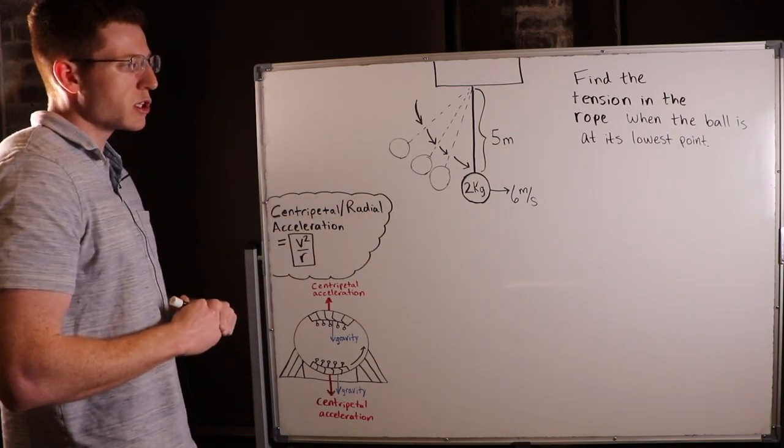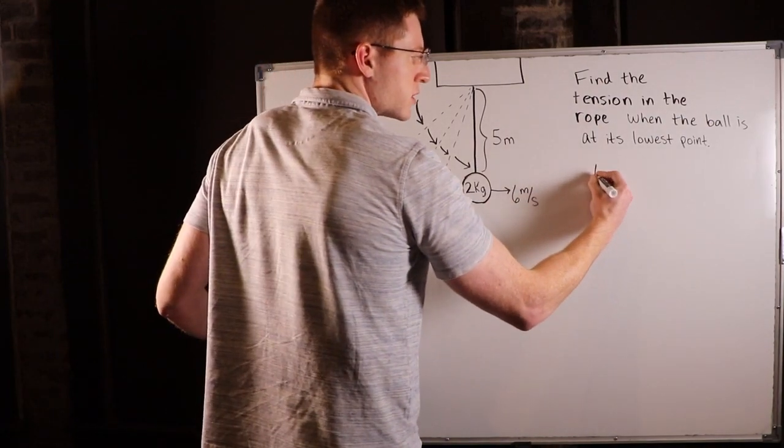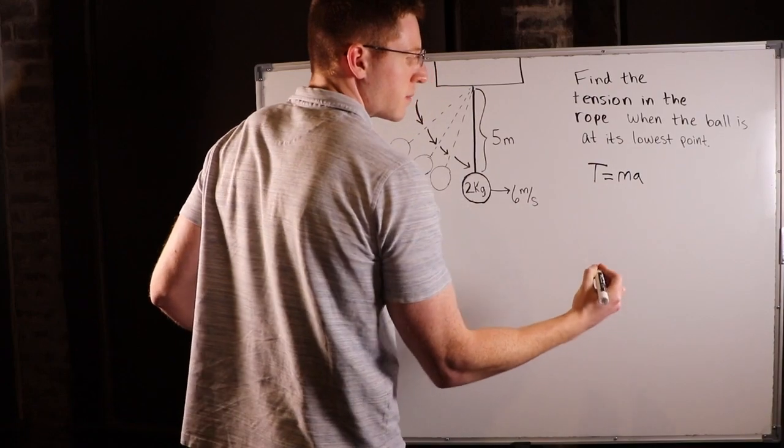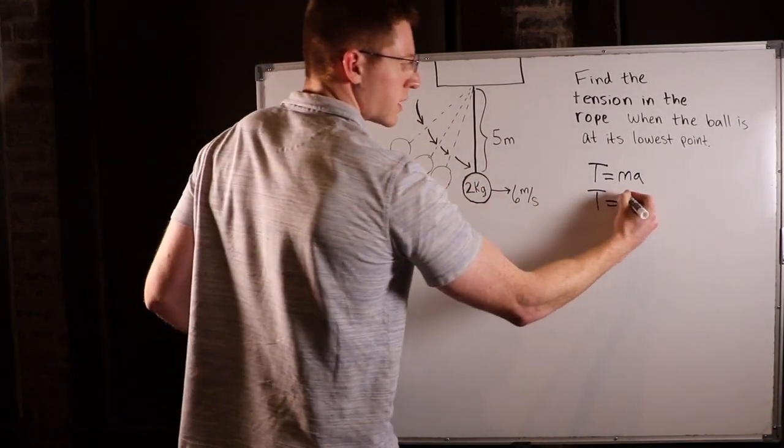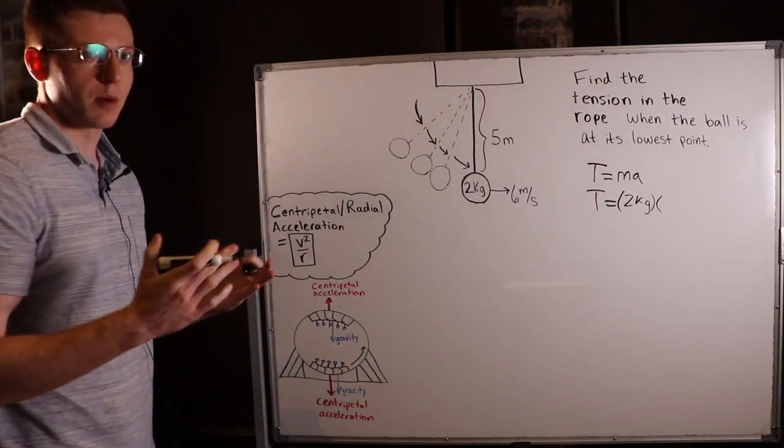So we know tension is just a force applied to a string or a rope. And since it's a force, we know it's going to be equal to mass times acceleration. So we already know the mass—it's 2 kilograms, so we can include that here. But we don't know the acceleration. That's the tricky part.